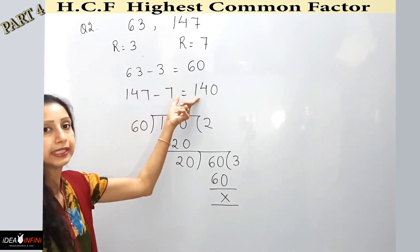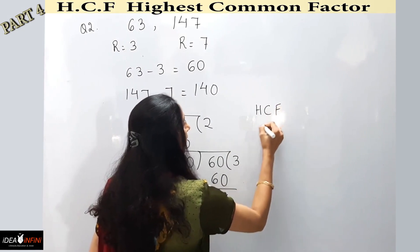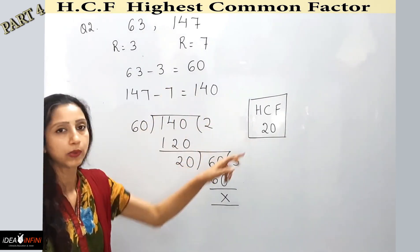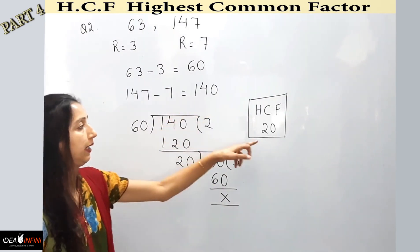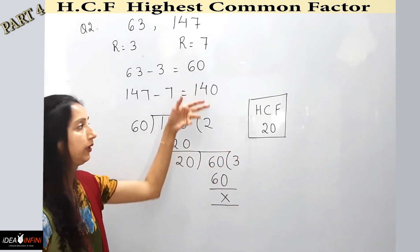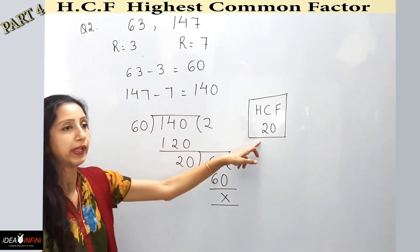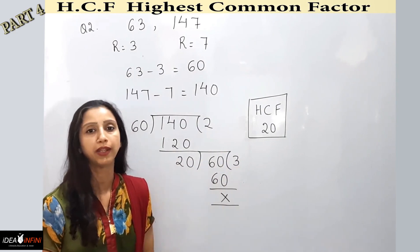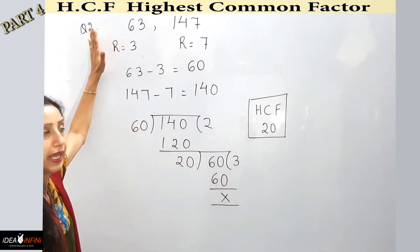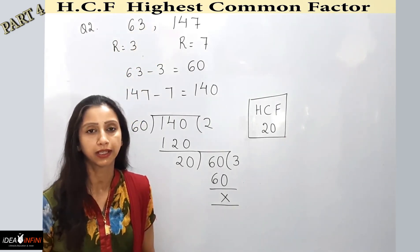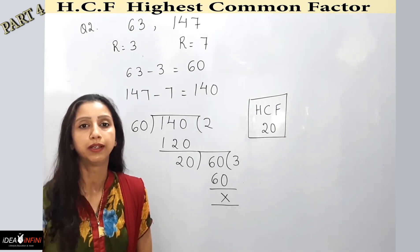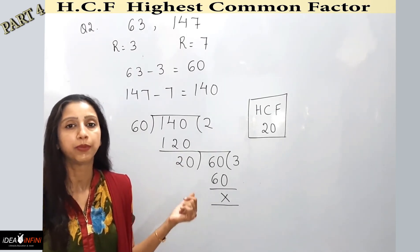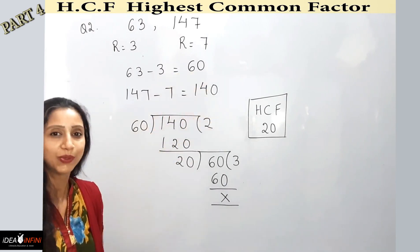The moment I get remainder 0 I stop, and the divisor 20 is the HCF of 60 and 140. To verify: 60 divided by 20 gives 3, 140 divided by 20 gives 7 with no remainder. And 63 divided by 20 leaves remainder 3, while 147 divided by 20 leaves remainder 7 — confirming 20 is the answer. Remember: always subtract the remainders first.